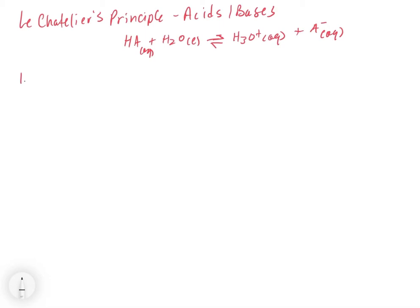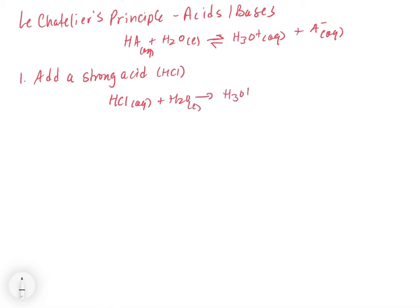One possibility would be to add an acid. What would happen if we threw in some HCl, for example? This could be HNO3 or whatever. The question is, what will this do to our equilibrium of HA plus H2O in equilibrium with H3O plus and A minus? The first thing we have to think about is what's going to happen when we put the HCl into water. HCl is a strong acid, and so when we add it to water, it's going to immediately ionize into H3O plus aqueous and Cl minus aqueous.